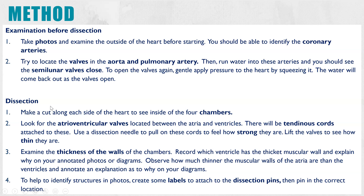Then you get onto the dissection itself. First, make a cut along the side of the heart so you can look into it and identify the four chambers: the left and right atria at the top, and the left and right ventricles at the bottom.